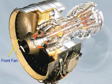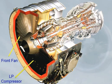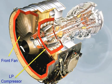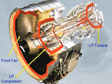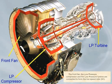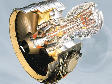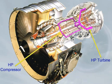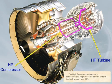The front fan, the low-pressure compressor, and the low-pressure turbine are connected to form the low-speed rotor N1. The high-pressure compressor is connected to a high-pressure turbine to form the high-speed rotor N2.